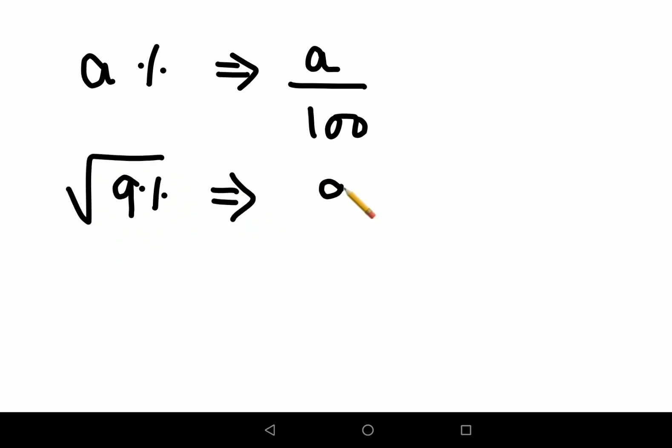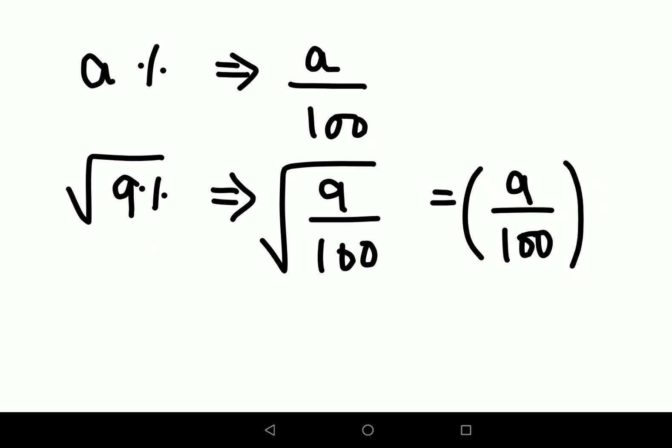Please understand: any number with a percentage sign can be written in numerical form by dividing the number by 100. This is very important to remember. Here you have 9%, so 9% can be written as 9/100, the whole thing under a root. This can also be written as (9/100) raised to the power of 1/2.